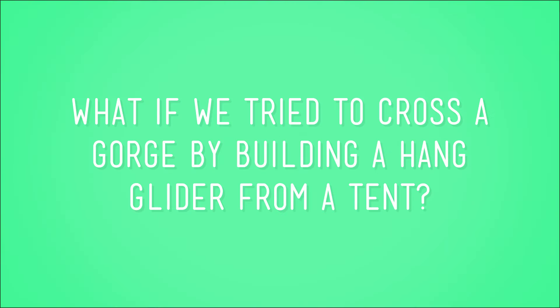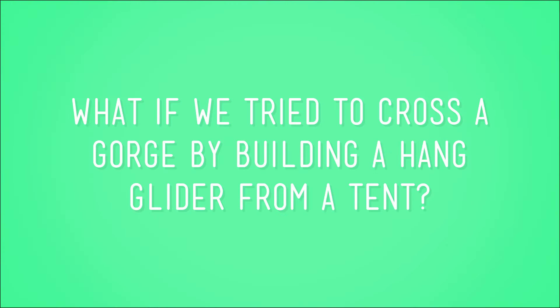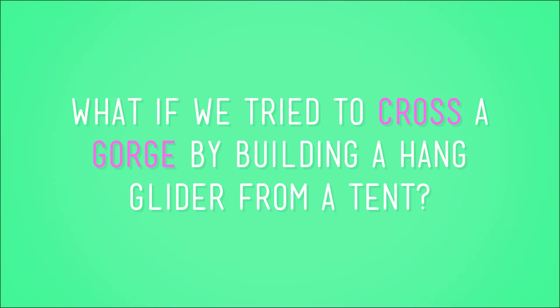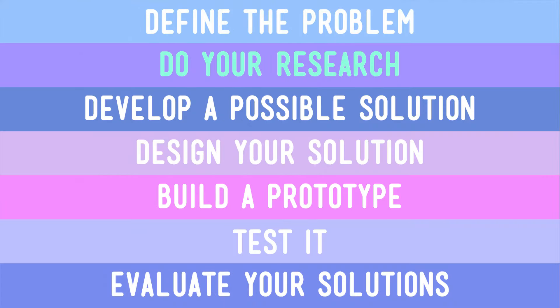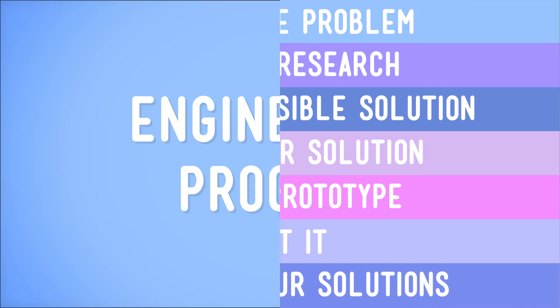These kinds of questions are really important when you're trying to come up with possible solutions to a problem. Like, what if we tried to cross a gorge by building a hang glider from a tent? Remember that? To come up with solutions to problems, like crossing a gorge, you already know that engineers use a series of steps known as the trusty engineering process.